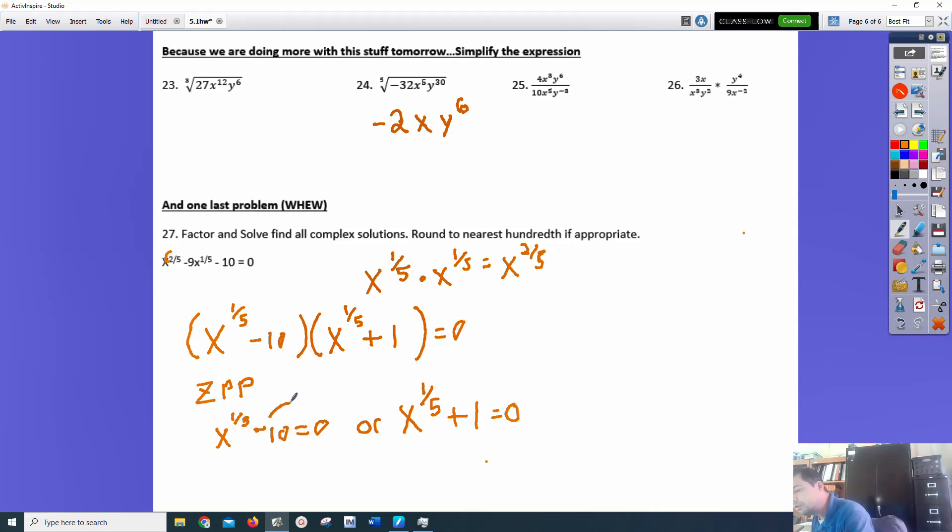I'm going to shift that negative 10 over and make it positive. x to the 1/5 is 10. And now I'm just going to raise both sides to the 5th power, because that's the opposite of 1/5. It'll be a lot since I raised 10 to the 5th power.